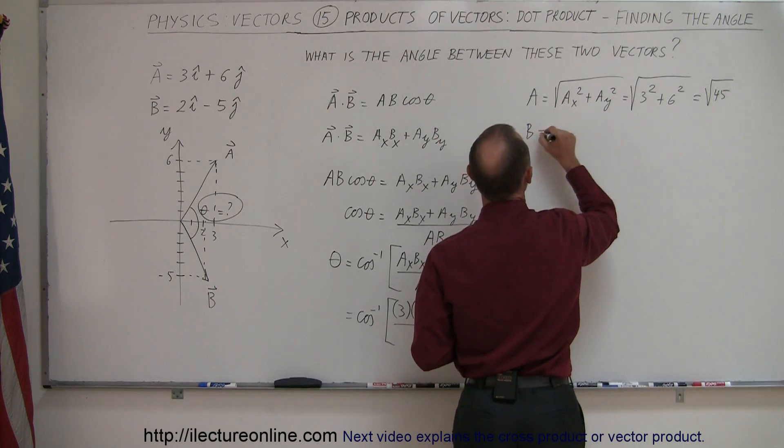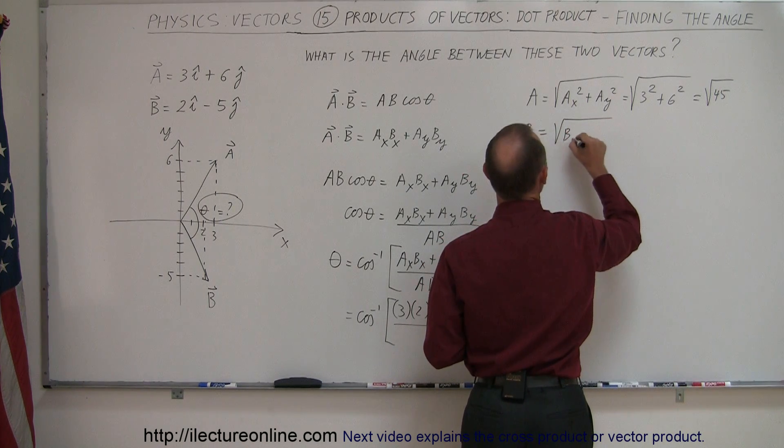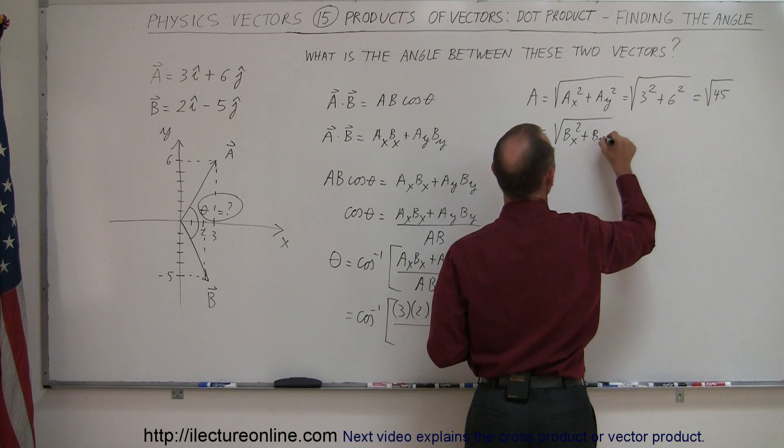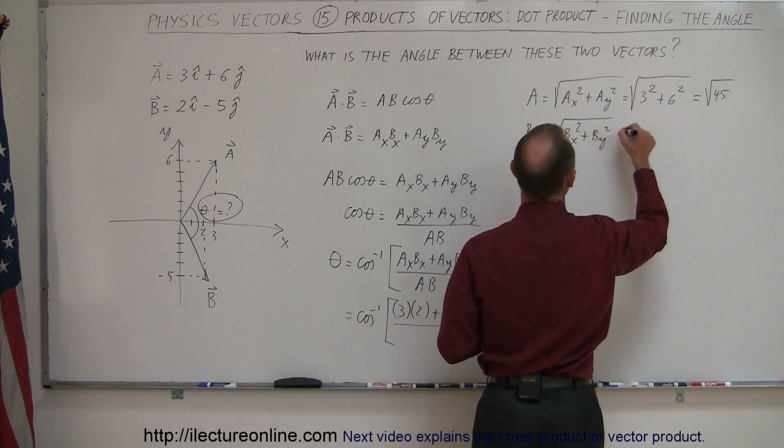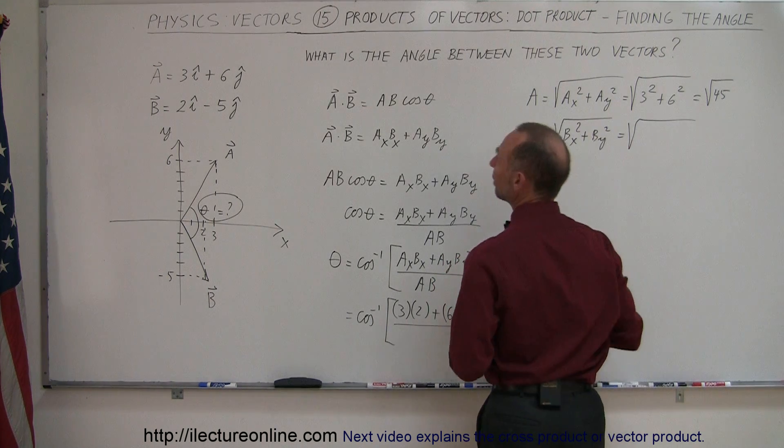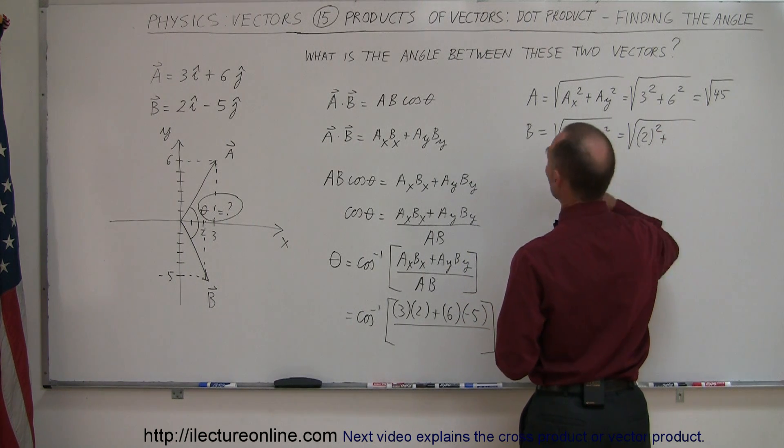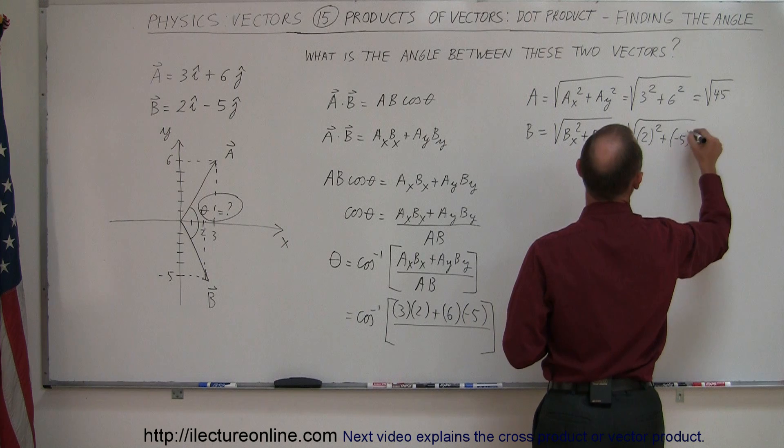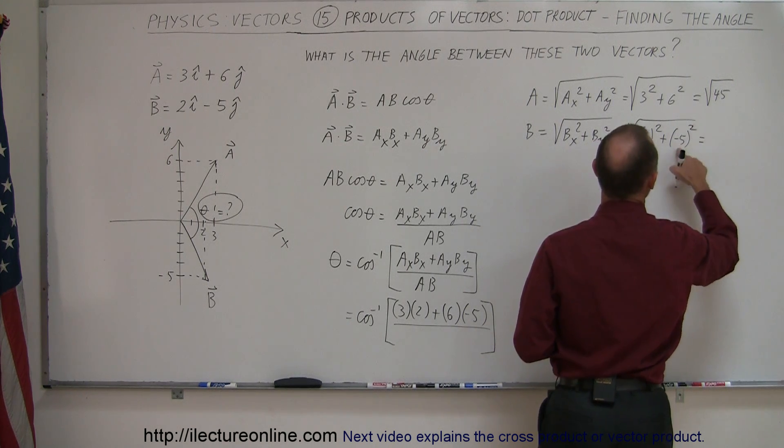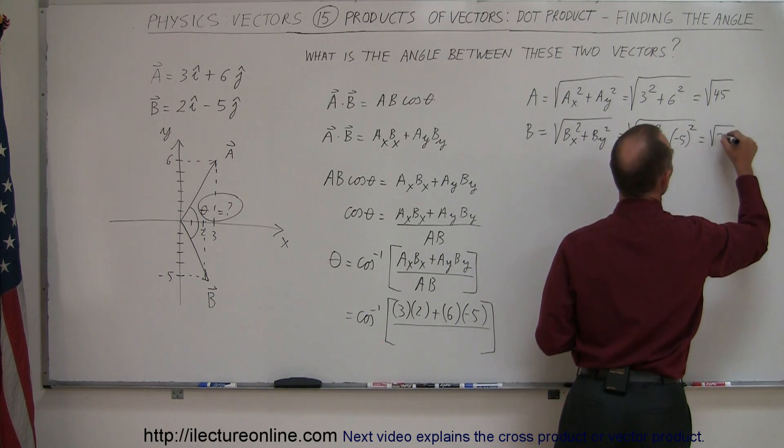And for the magnitude of B, that's equal to the square root of B sub X squared plus B sub Y squared. Sum them together, take the square root. And so B sub X is 2 squared plus B sub Y is a minus 5 squared. So that would be 25 plus 4 or the square root of 29.